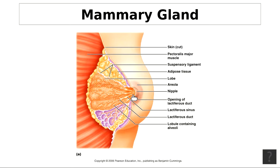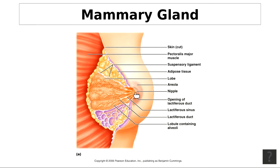The ducts open onto the surface of the nipple — N-I-P-P-L-E — the pigmented projection located in the middle of a circular pigmented area called the areola. The areola is the pigmented disc on the surface of the breast, and the nipple is the structure projecting from its middle. That ends the first part of our notes on female reproduction.